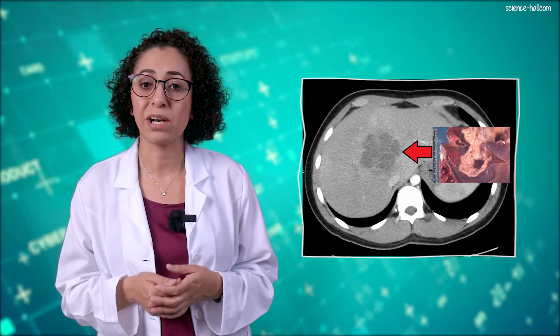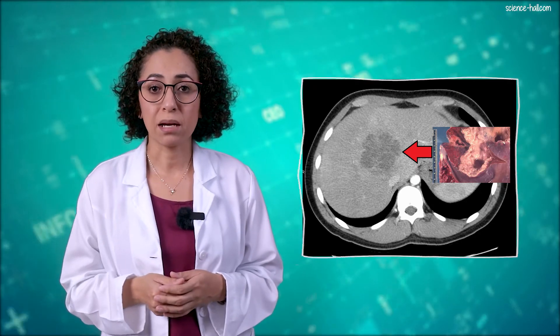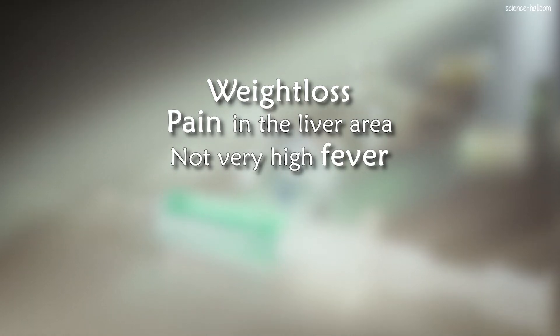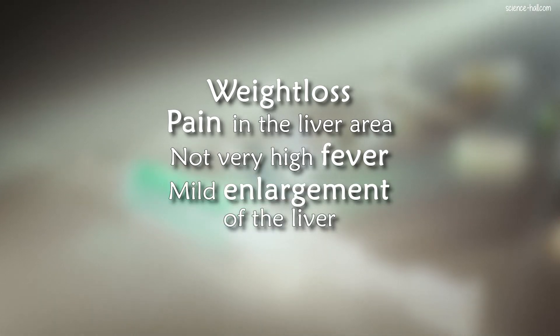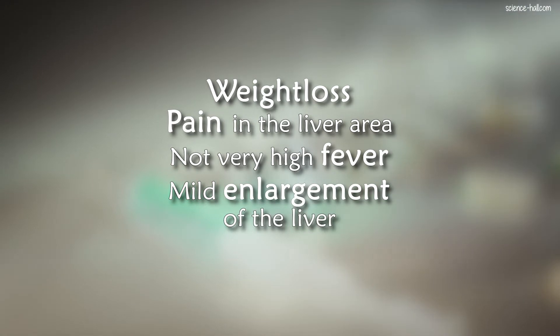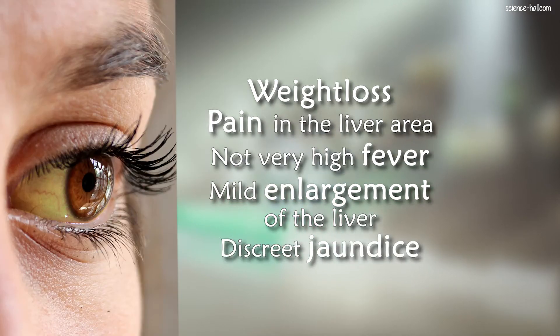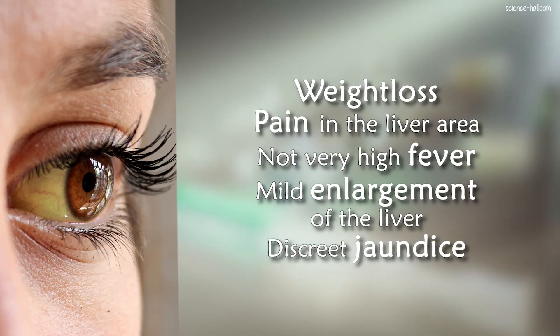The most common type of extra-intestinal amoebiasis is liver abscess. This disease begins with a slow and insidious course accompanied by weight loss, pain in the liver area located on the upper right side of the abdomen, low-grade fever usually 101 to 103 degrees Fahrenheit, mild enlargement of the liver known as hepatomegaly, and discrete jaundice manifesting as a yellowish color in the sclera — the white part of the eyes.